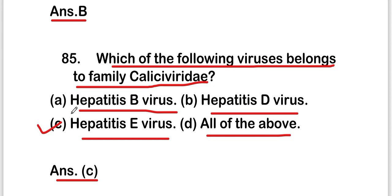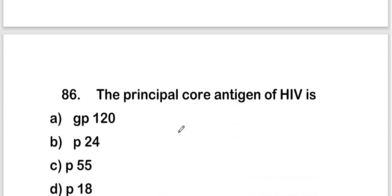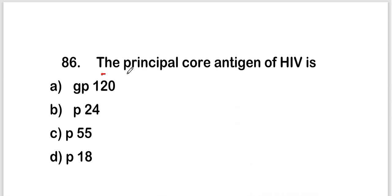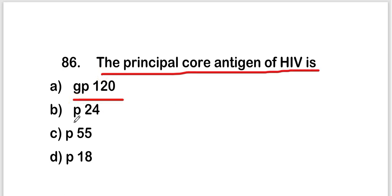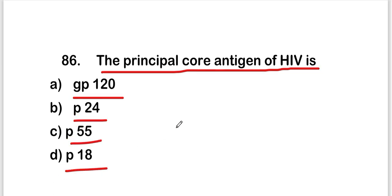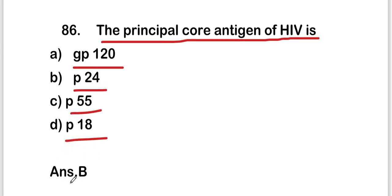The next question is: the principal core antigen of HIV is GP120, P24, P25, or P18? The right answer is option B — P24 is the principal core antigen of HIV.